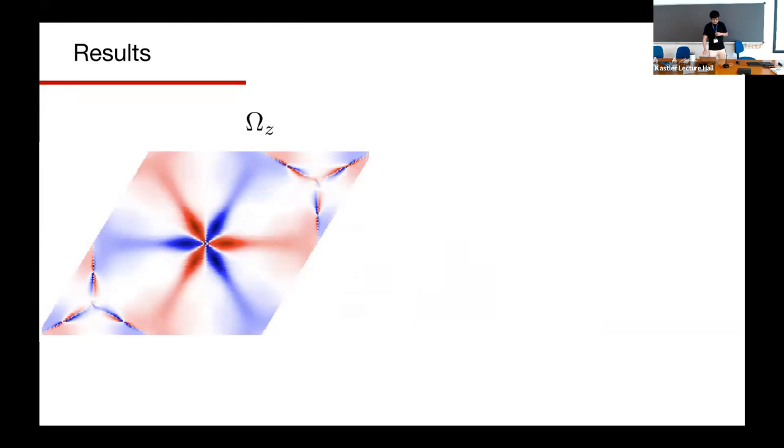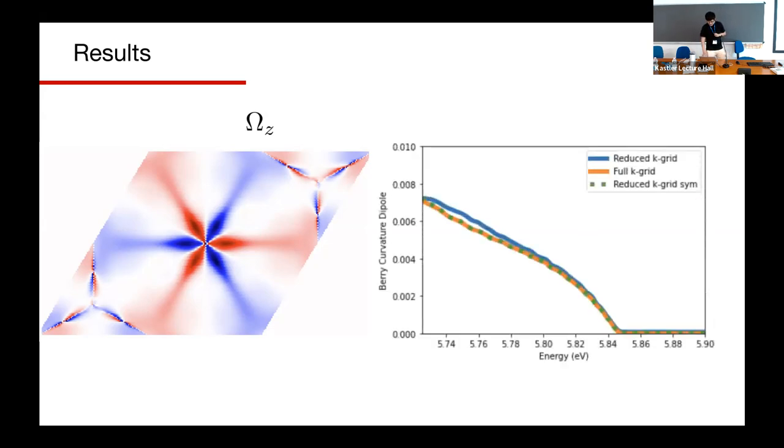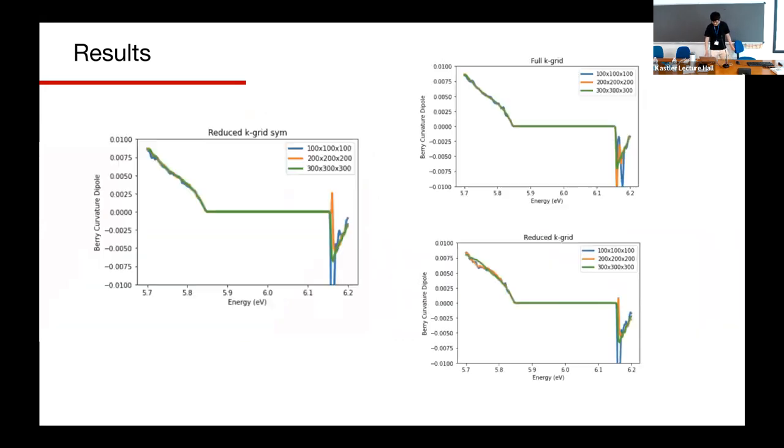From the result part, we made a seemingly same result as before after symmetrization. Here, we have totally perfect symmetry now. From the result side, if we only use the reduced k-grid after symmetrization, it can converge very close to the full k-grid calculation before symmetrization. And it keeps very good convergence in these parts except the Weyl point part.